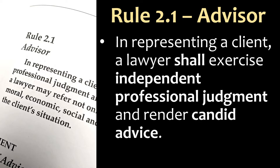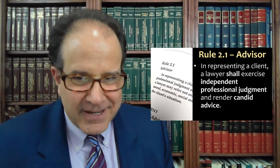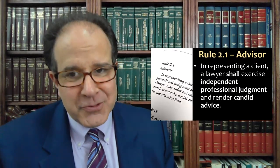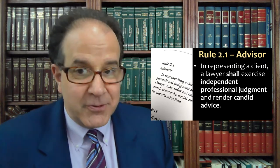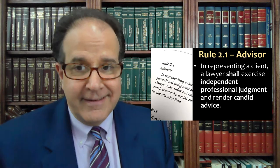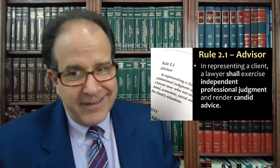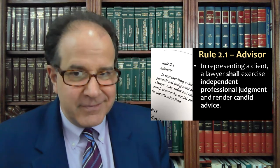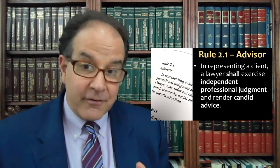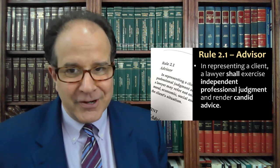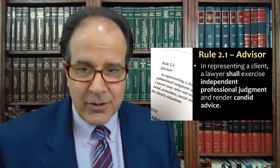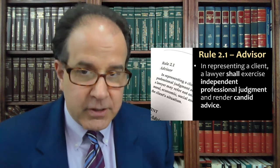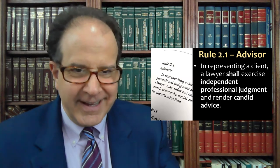Notice that we have two parts of this sentence. First is exercising independent professional judgment. We've seen that before in some of our rules — like Rule 1.8, when someone else is paying your fees besides the client, they're not supposed to control your decision making. Rule 5.4 talks about managers, lenders, or owners of your firm not interfering, especially if they're not lawyers, with your independent professional judgment about whether to settle a case, how to handle a case, how to pursue a claim, what motions to file, and so forth.